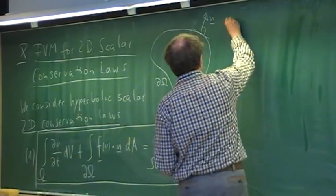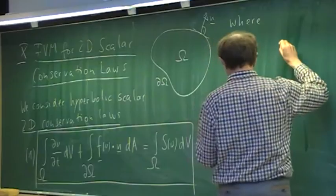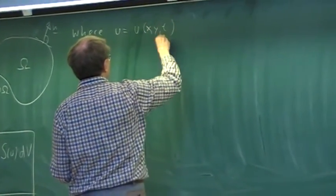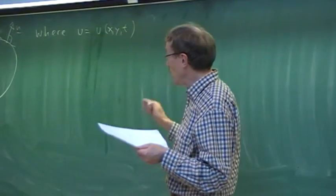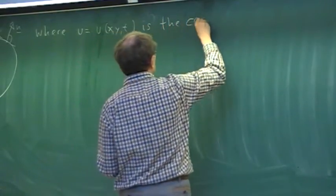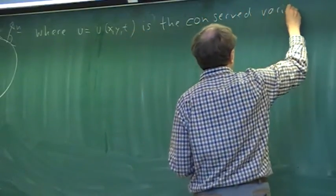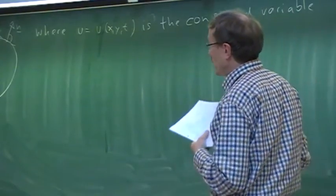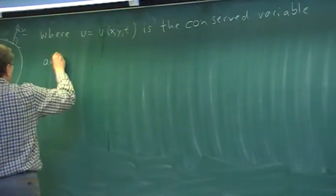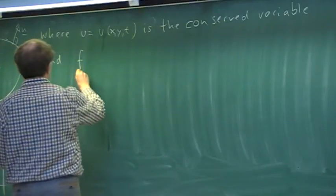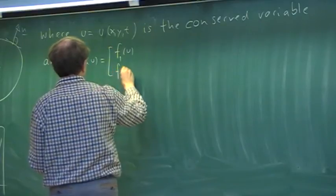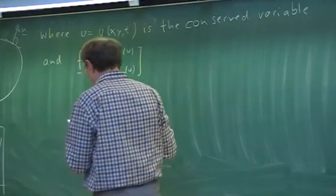In this conservation law, u is now a function of x, y, and t — so we have added y-dependence compared to the 1D case. For example, if this were the continuity equation, u would be the density. The flux f(u) is a vector with two components: an x-component f1(u) and a y-component f2(u). That is the flux vector.